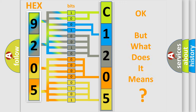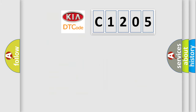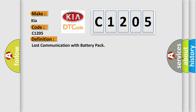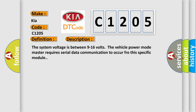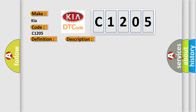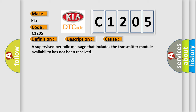We now know in what way the diagnostic tool translates the received information into a more comprehensible format. The number itself does not make sense to us if we cannot assign information about what it actually expresses. So, what does the diagnostic trouble code C1205 interpret specifically for Kia car manufacturers? The basic definition is: Lost communication with battery pack. The system voltage is between 9 to 16 volts. The vehicle power mode master requires serial data communication to occur from this specific module. This diagnostic error occurs most often when a supervised periodic message that includes the transmitter module availability has not been received.